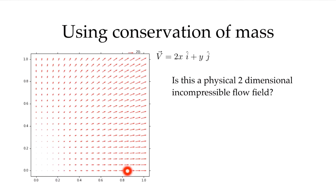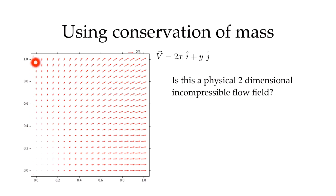Looking at the function when y equals zero, there has to be a v component of velocity to carry mass through this surface. When y equals zero, that v component is zero, so there's no mass crossing that surface. At x equals zero, the velocity vectors all point in the same direction, and the u component of velocity is zero there — no u component means nothing crosses that surface. So there is flow leaving the domain on two faces, but nothing coming in on the other two.